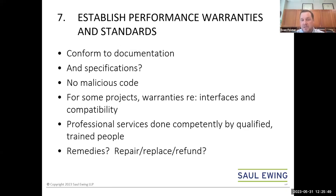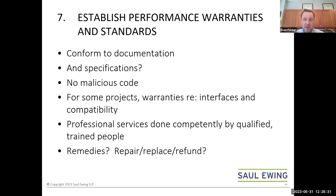Depending on the nature of your project, you'll also want to consider warranties around interfaces and compatibility — compatibility with your existing platforms, future compatibility, maintaining compatibility with future operating systems, future industry standards, or making sure the software or hardware remains compliant with applicable law. With respect to IT professional services, you'll want a warranty that they've been done competently and by qualified trained personnel. If you're using an outside vendor, make sure they have the appropriate authorizations or licenses from the underlying vendor so as not to void any warranty. Consider whether there are professional standards that need to be adhered to, such as an ASMI or other applicable professional standard.